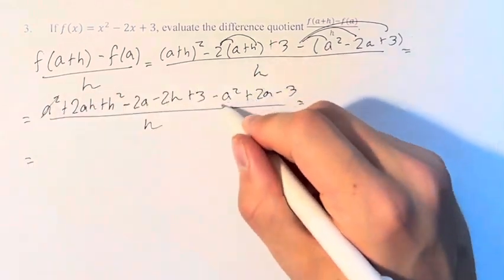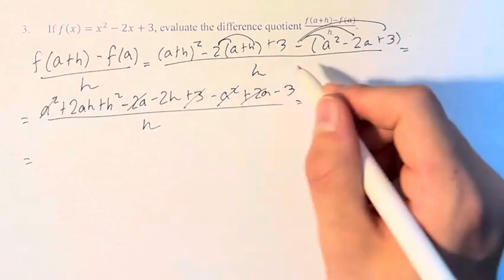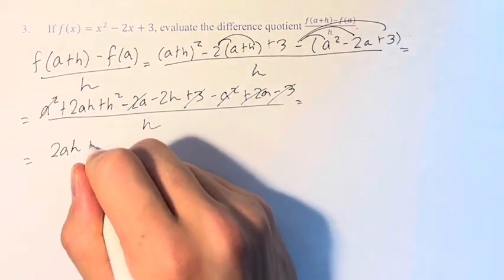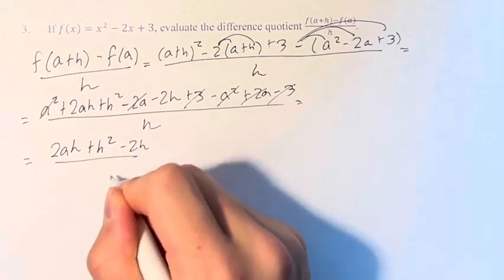a² minus a² cancels out. 2a minus 2a cancels out. 3 minus 3 cancels out. And we're left with 2ah + h² - 2h over h.